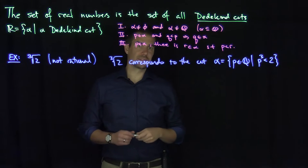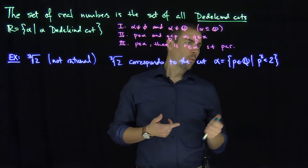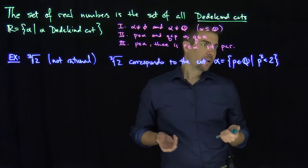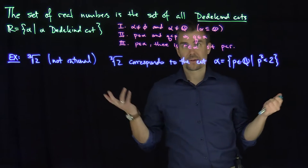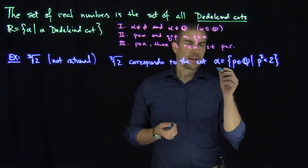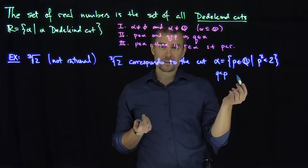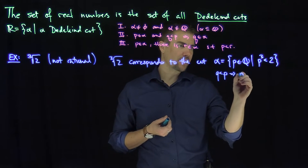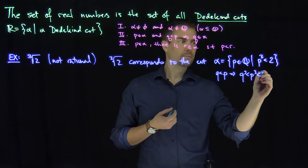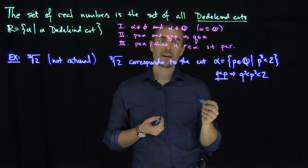We can clearly see that this is a cut. First of all, if we plug in p equals one, one cubed is less than two. If we plug in p equals ten, ten cubed is not less than two. So property one is trivially satisfied. And if q is less than p, by the monotonicity of the cubic function, this implies q cubed is less than p cubed, which is less than two — so q is in the cut, meaning anything less than p is also in the cut.